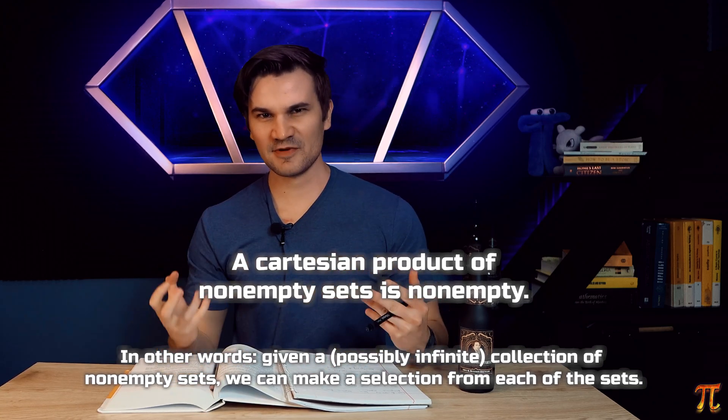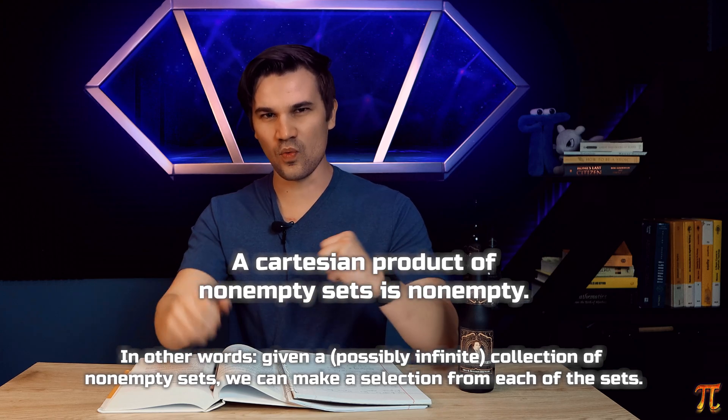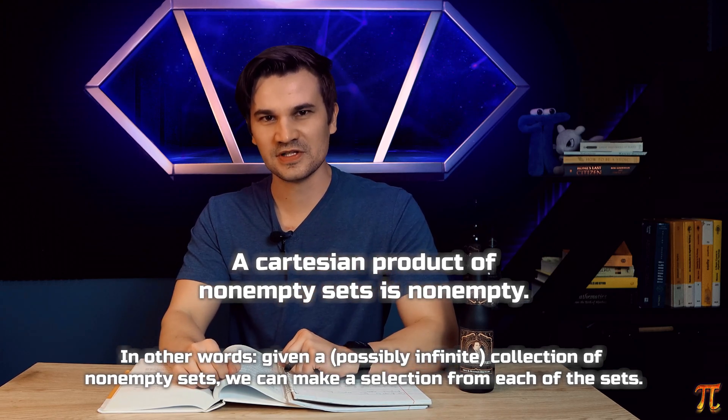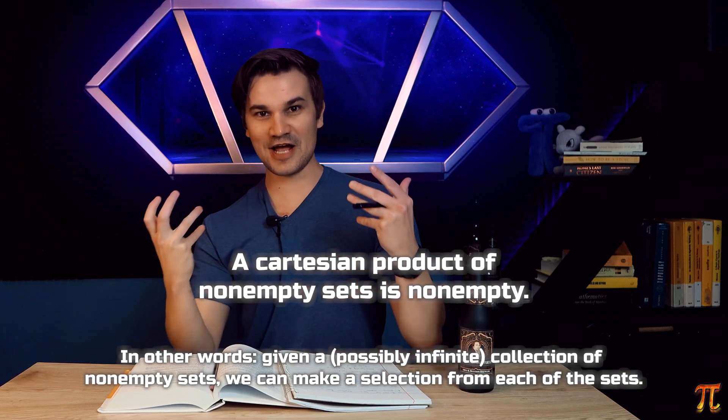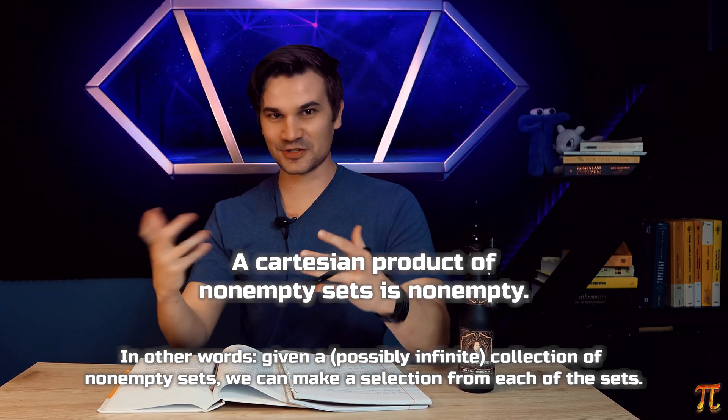For example, if we take the axiom of choice, then there exists a well-ordering on the set of real numbers. What's the ordering, you ask? Well, I can't tell you, and I can't describe it, and I can't construct it. Not explicitly, anyway.